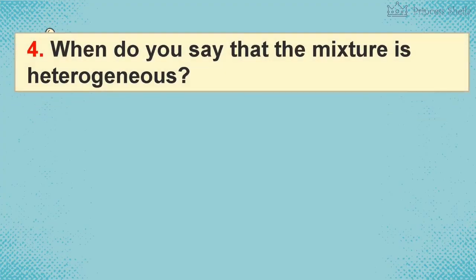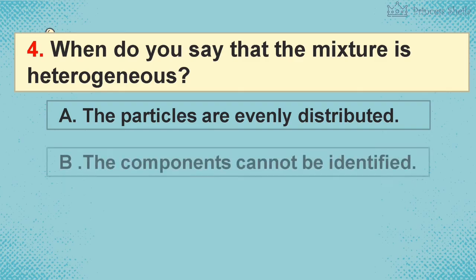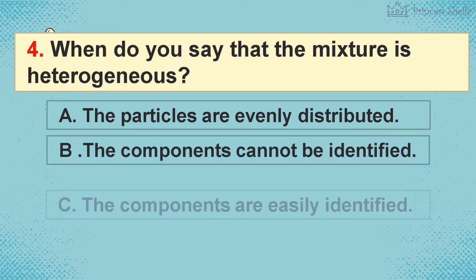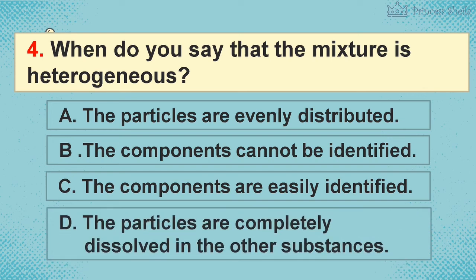4. When do you say that the mixture is heterogeneous? A. The particles are evenly distributed. B. The components cannot be identified. C. The components are easily identified. D. The particles are completely dissolved in the other substances.